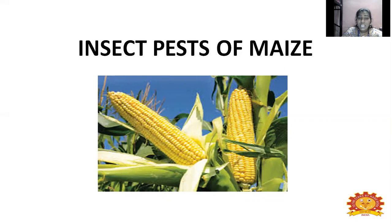Maize accounts for around 10% of total food grain production in the country. This production of maize can be declined or decreased by damage-causing agents present in the field, either pests, diseases, or any kind of nutritional deficiency. Among these kinds of damages, insect pest damage is one of the most important, causing more yield reduction when compared to disease and nutrient deficiency.